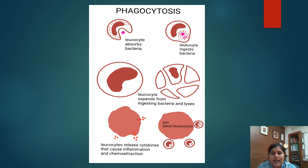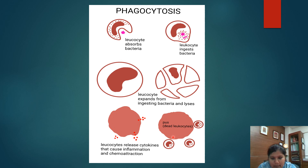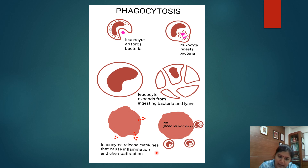This is a pictorial representation of phagocytosis. You can see a WBC and a bacterium — the WBC tries to engulf and ingest the bacteria. When the amount of bacteria keeps increasing, the cell size also increases and eventually there occurs lysis of the cell. The lysed dead WBC is what we call pus. The dying WBC releases cytokines that cause inflammation and chemoattraction, leading to additional collection of WBCs at the site of inflammation.